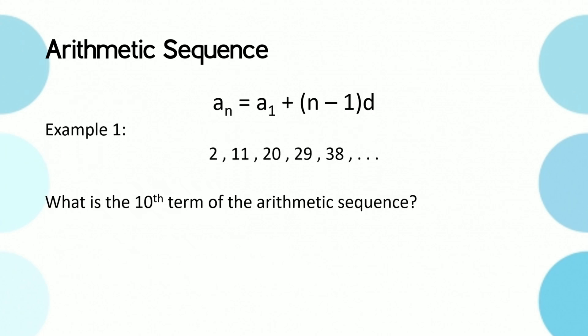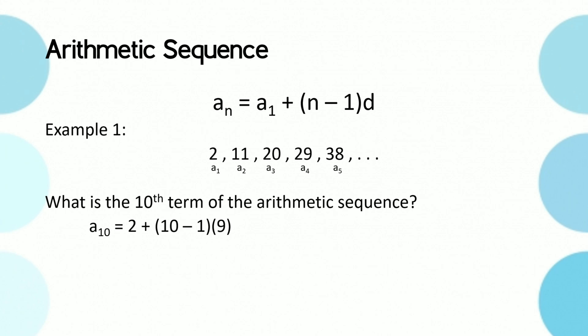Let's have example 1. What is the 10th term of the arithmetic sequence 2, 11, 20, 29, 38? Find the given first, and then substitute it to the general rule. a_n is the term that we're looking for. a_1 is 2, n is 10 because there are supposedly 10 terms, and the common difference is 11 minus 2, which is 9. And the solution is as follows: a_10, or the 10th term, is 83.